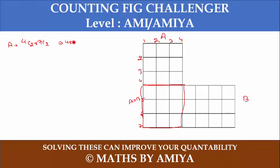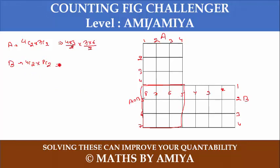Section A equals four into three by two into seven into six by two. For section B, we have four vertical lines and eight horizontal lines. So section B is 4C2 into 8C2, which is four into three by two into eight into seven by two.